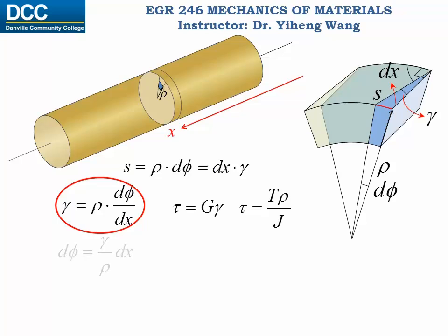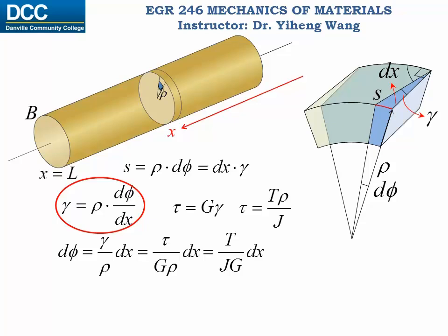Based on all these, we can derive that dφ equals T over JG dx. Therefore, if we want to find the angle of twist of one end of this shaft — say end B, which is at x equals L — relative to the other end — say end A, which is at x equals 0 — then the angle of twist of B relative to A equals the integration of dφ along the entire length of the shaft, from x equals 0 to x equals L.